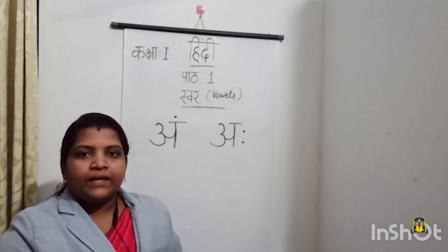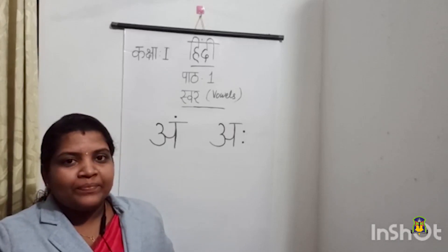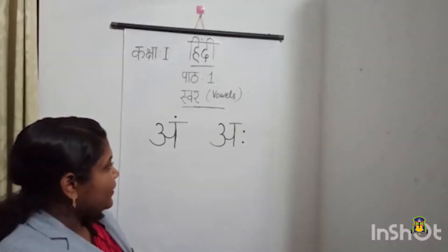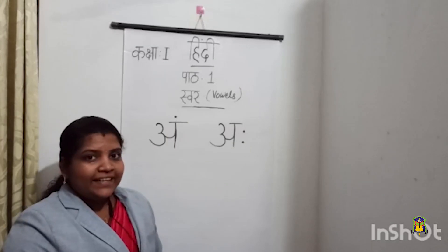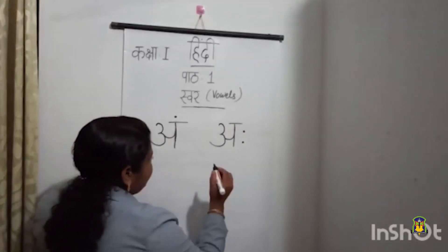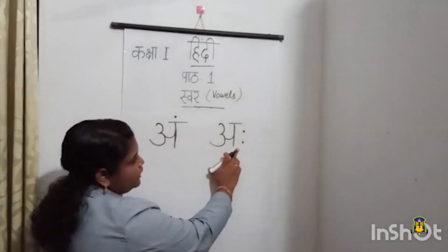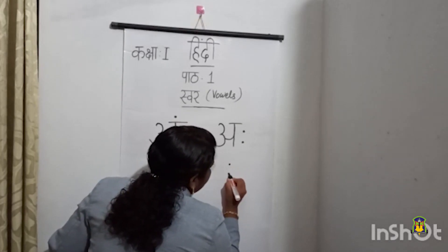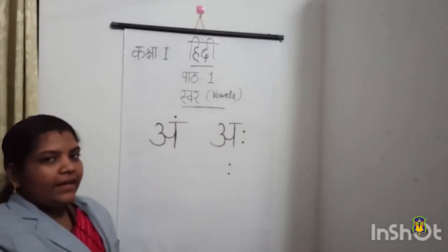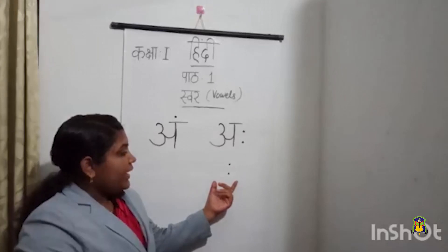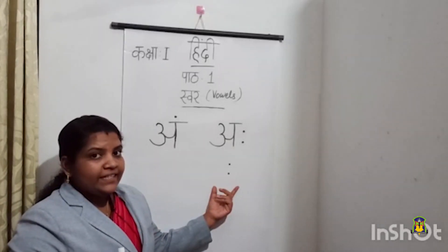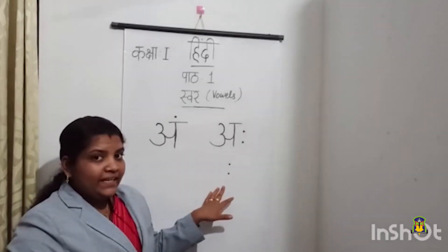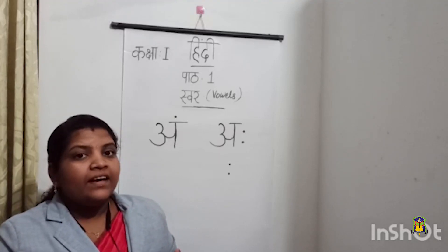Symbol means Chinnam — in Malayalam we say Chinnam. So do you want to know which is the symbol of this letter? Let me write the symbol. Can you see here two dots? These two dots are the symbol of letter A. And the pronunciation of the symbol is HA. Say with me: HA.